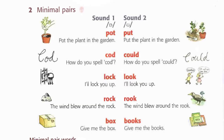2A word pairs: Pot — put. Cod — could. Lock — look. Rock — rook. Box — books.